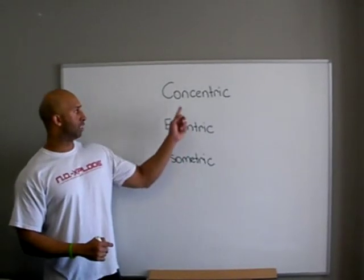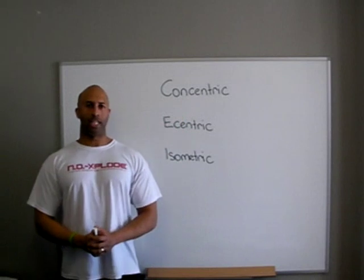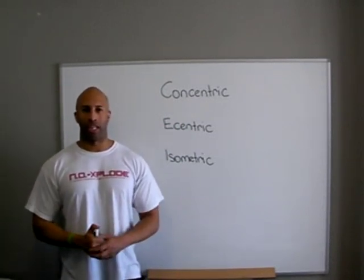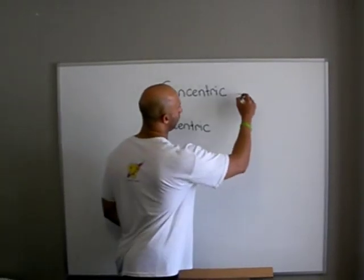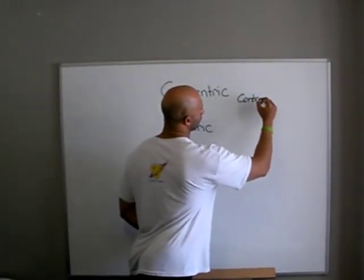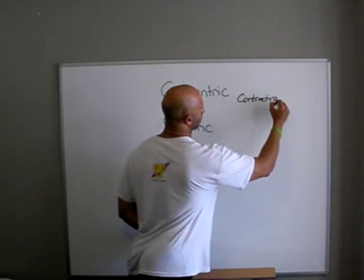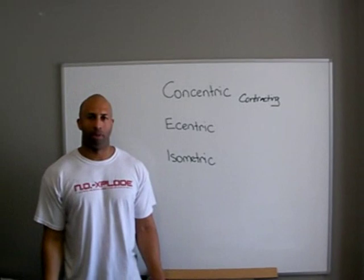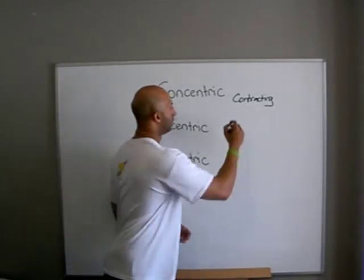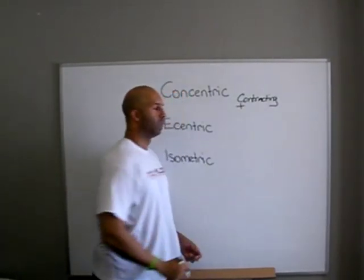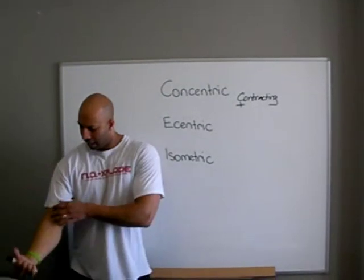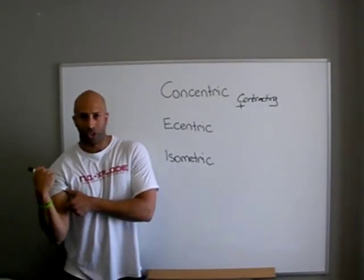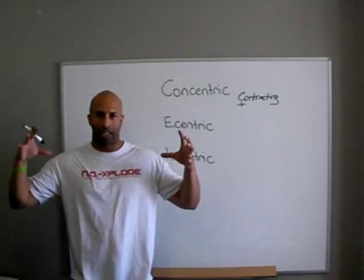The first type of muscle contraction is the concentric phase. The concentric phase is when the muscle is contracting — think concentric, think contracting. It's also considered the positive phase. As the muscle tissue contracts, such as the bicep, it is actually shortening. When the muscle contracts, it shortens.